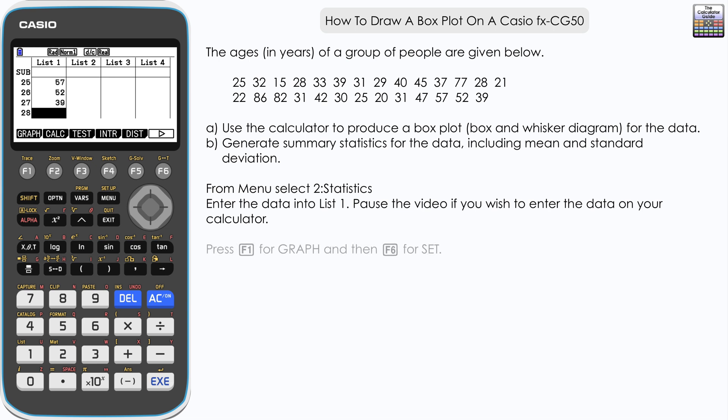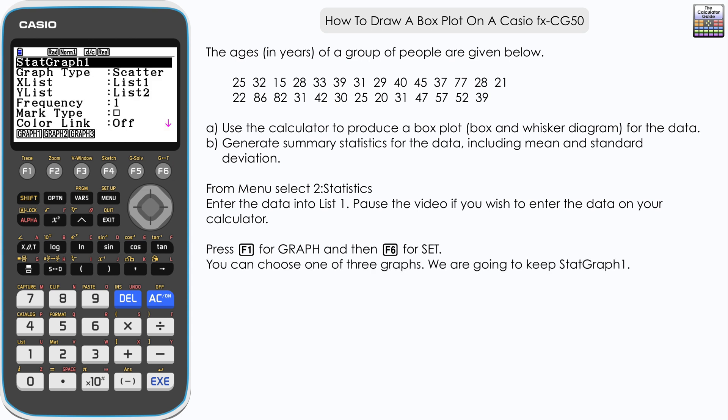Once we've entered all of the values, you want to press F1 for graph and then F6 for set, and we're going to choose StatGraph 1. Although you have up to three different ones that you can have at one time, we'll choose StatGraph 1 for this video, and then we want to alter the graph type.